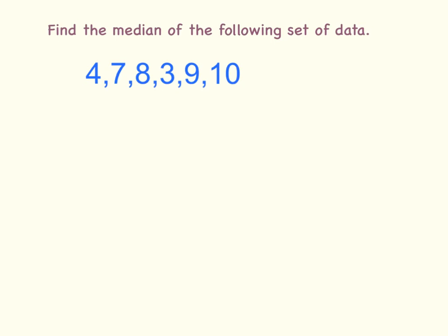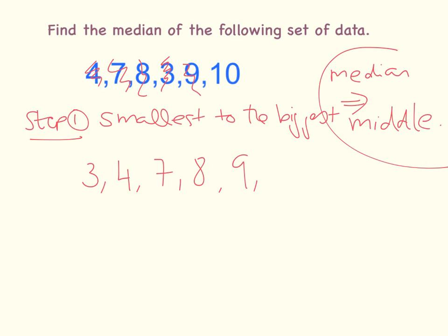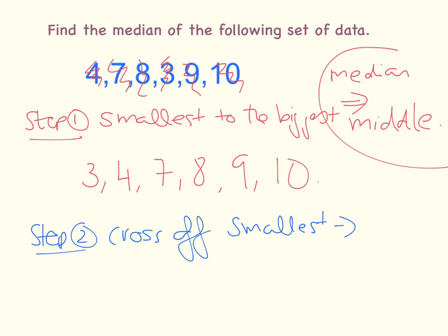Let's try another question. Find the median of the following set of data. I'm just going to remember that the median is all about the middle number. But in order to find the middle number, I must follow step one, which is to write them in order from the smallest to the biggest. My smallest number here is 3, quickly followed by 4, and then we have 7, 8, 9, and 10. Then I follow step two, which is to cross off from the smallest and then on to the biggest and repeat. The smallest number here is 3, so I'm going to get rid of 3, then get rid of 10, then get rid of 4, then get rid of 9.